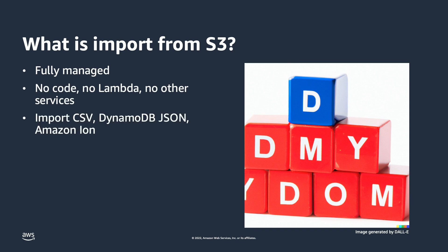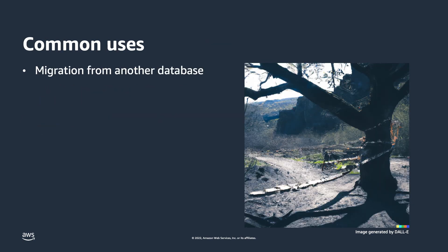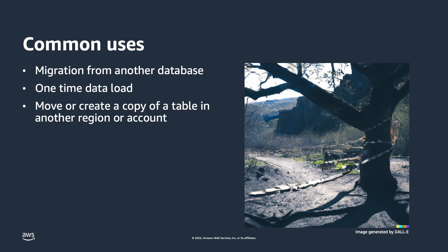For data formats you can import CSV, DynamoDB JSON, and Amazon Ion formats. If you're not familiar with DynamoDB JSON or Amazon Ion formats, I put links in the description for more information. The most common use cases for this feature are when you need to do a migration from another database, importing data from S3 for a one-time data load, to move and create secondary copies of a table to a different AWS region or account, and to import data that was previously exported with the DynamoDB export to S3 feature.